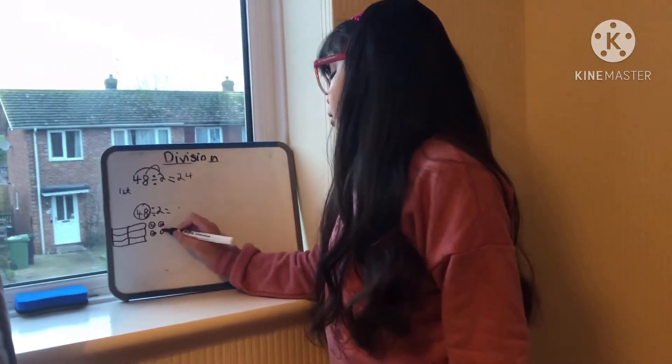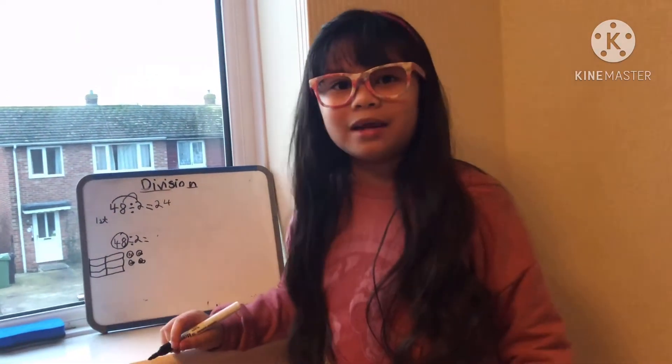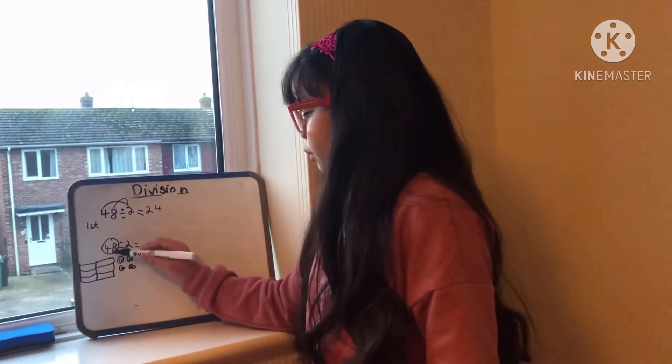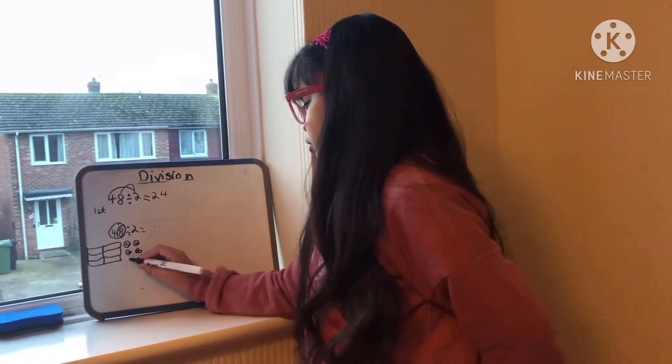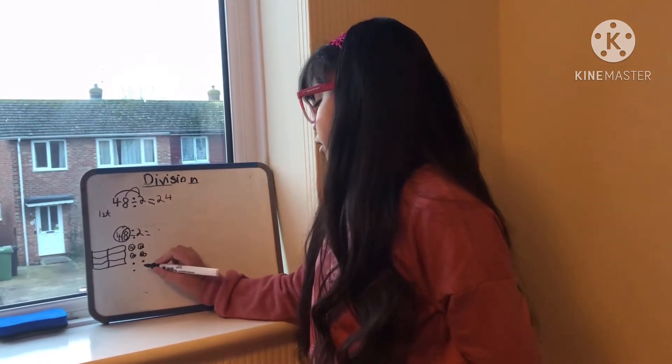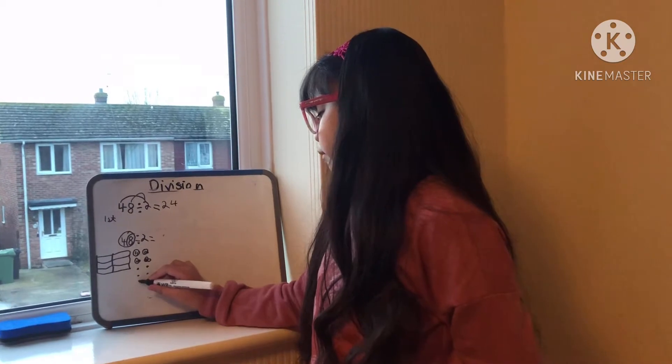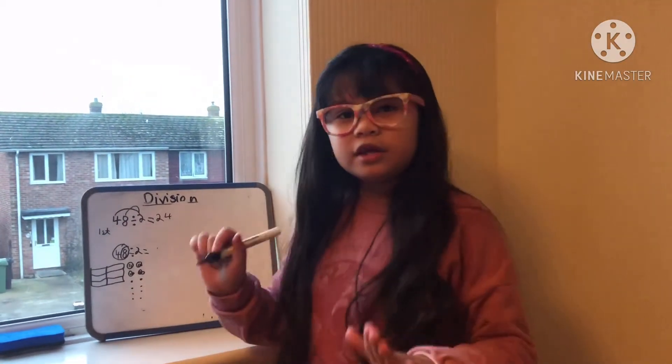What we have to do next, we need to draw the ones column, which we're going to draw eight ones. So let's draw that now: one, two, three, four, five, six, seven, and eight.